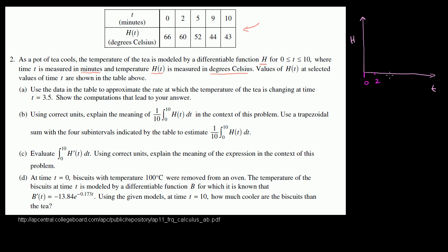At time 0, the temperature is 66 degrees Celsius. At time 2, it is 60 degrees Celsius. At time 5, it is 52 degrees Celsius. At time 9, after 9 minutes, it's at 44 degrees Celsius. And after 10 minutes, it's at 43 degrees Celsius.